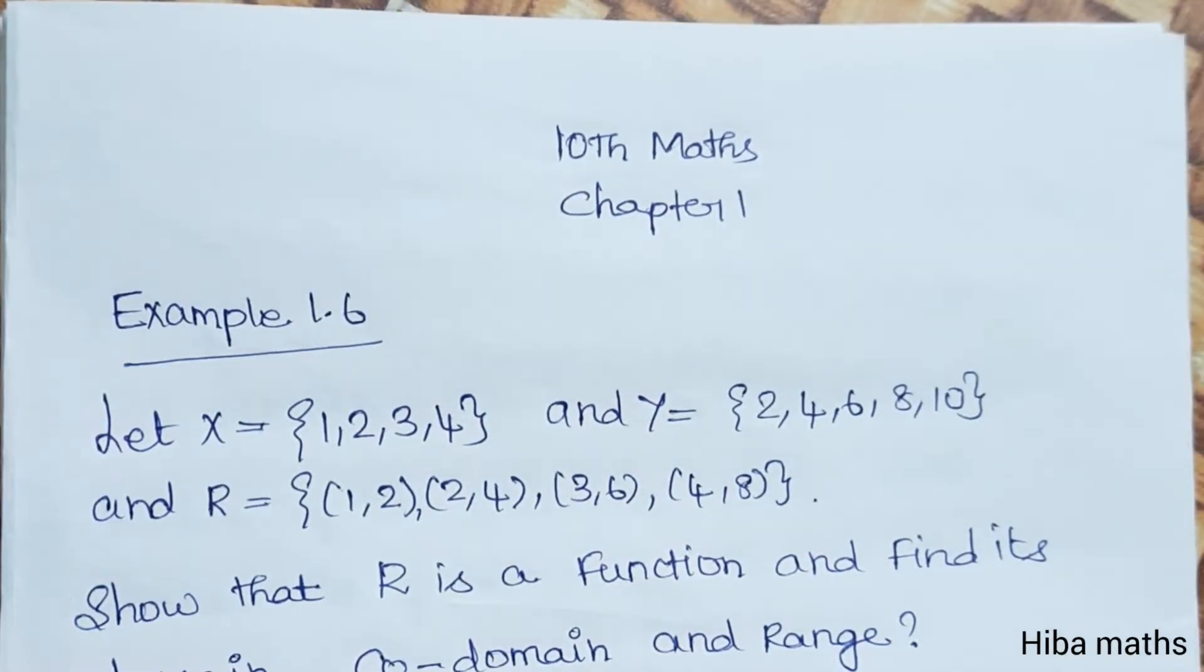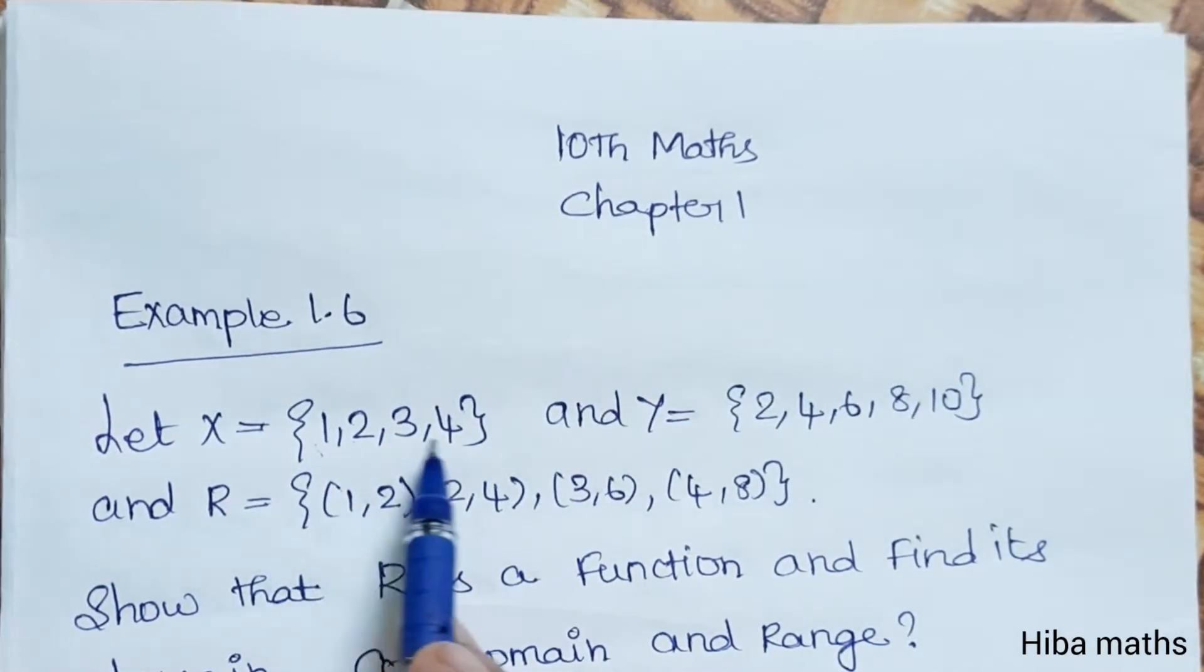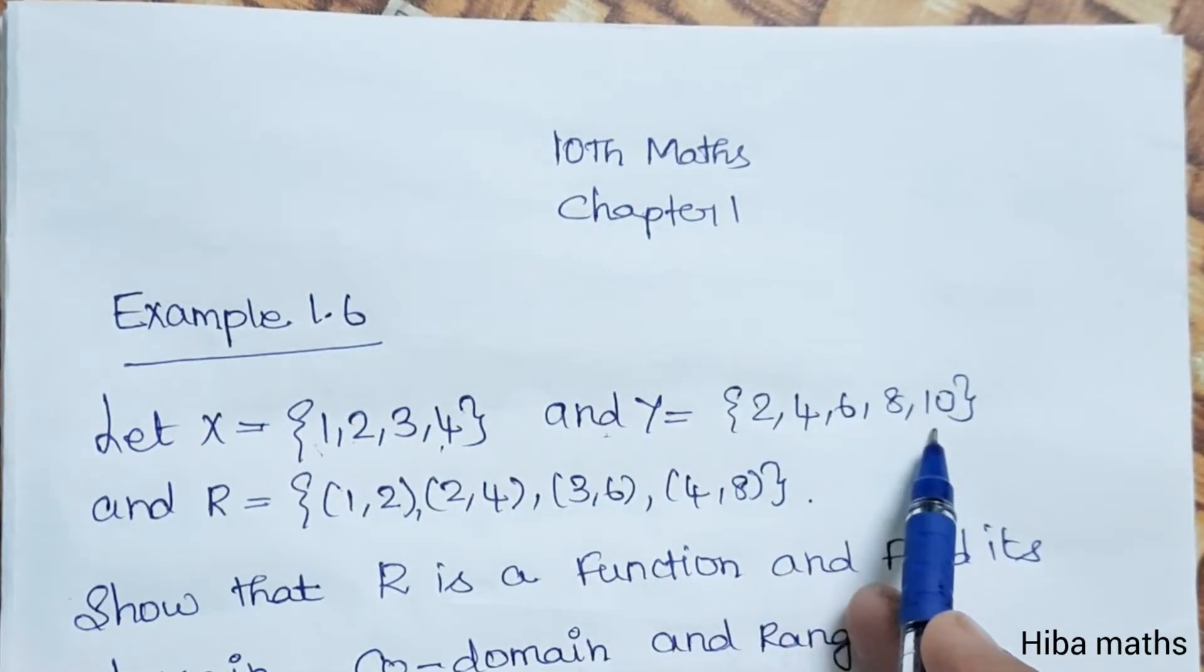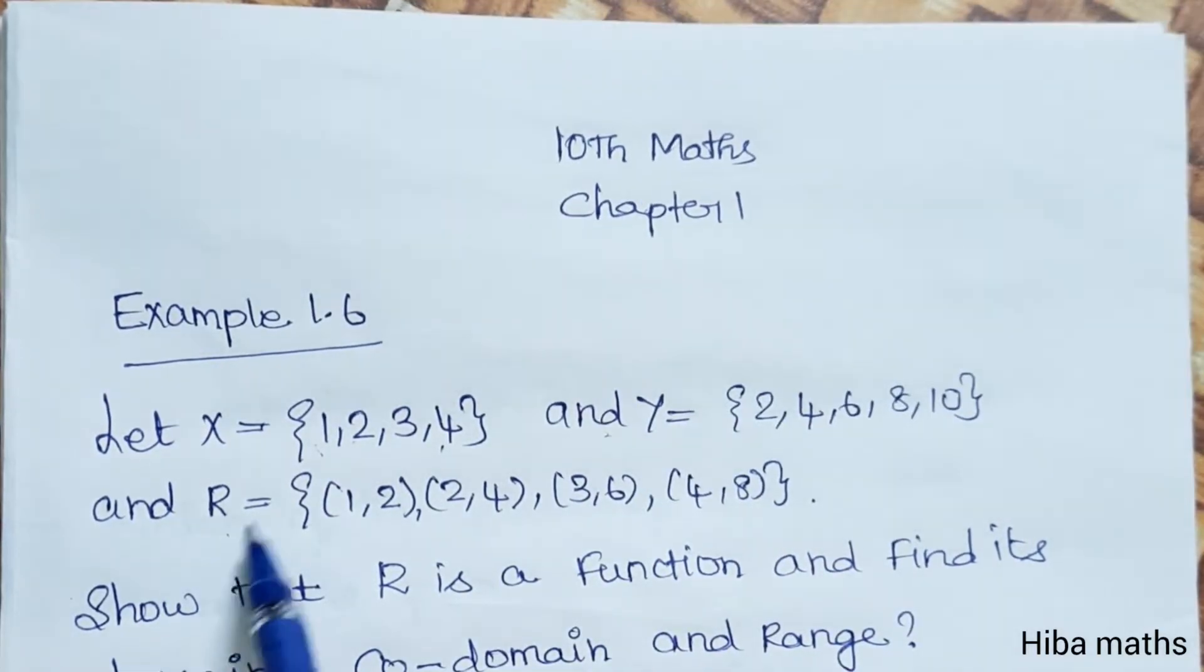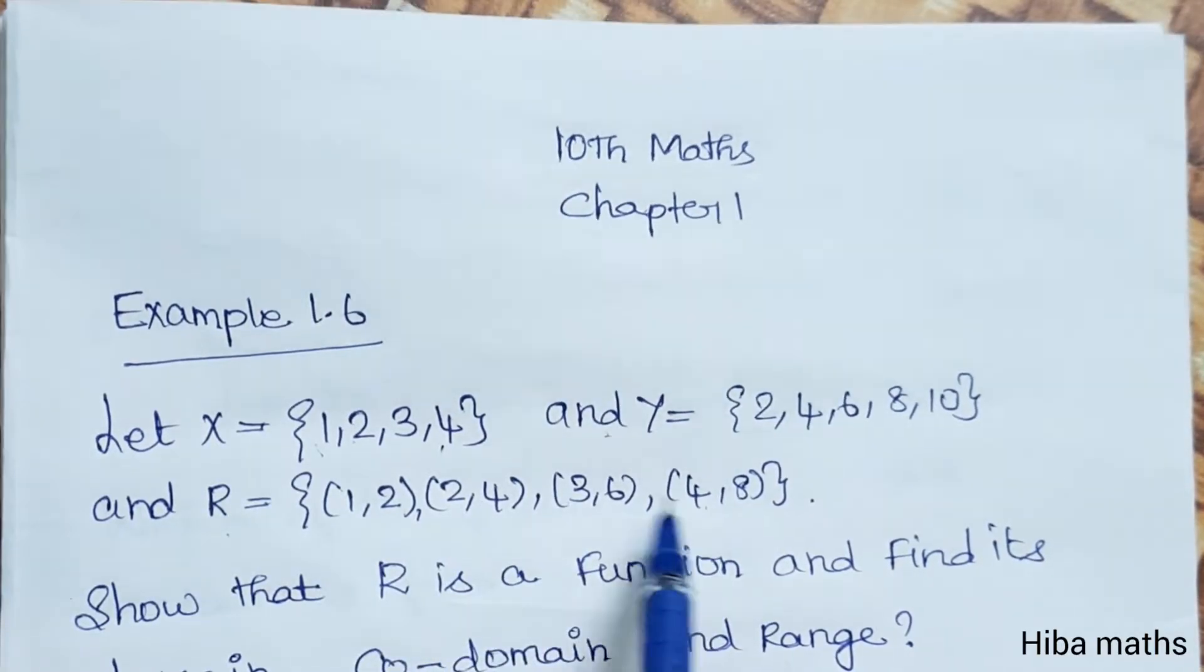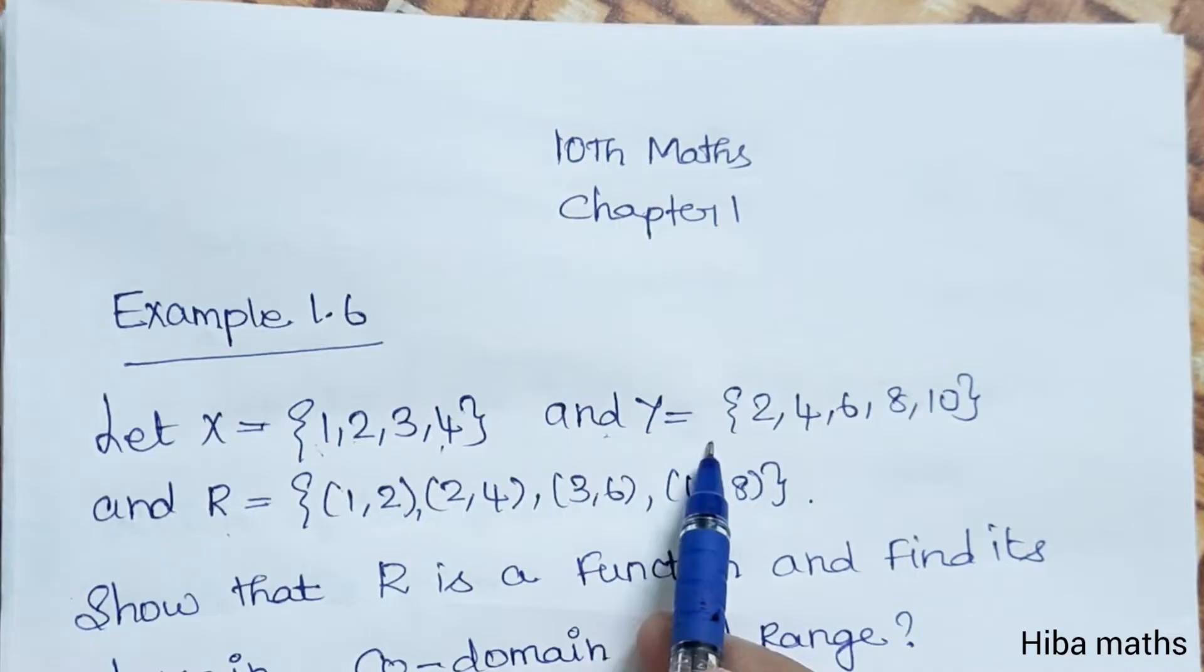Example 1.6. Let X = {1, 2, 3, 4} and Y = {2, 4, 6, 8, 10} and R = {(1,2), (2,4), (3,6), (4,8)}.